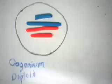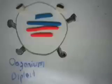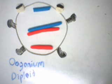This is the oogonium. It is a diploid cell that females have, and it divides by mitosis while the person is still in the womb.